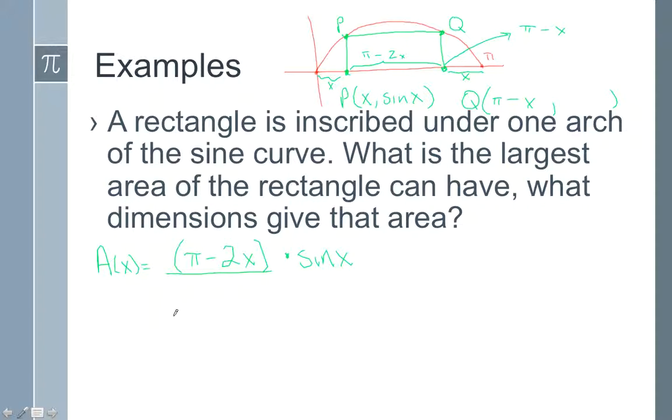The area function is now length times width, and that means I can find the derivative of my area function. The derivative here, this is a product, which means we better use the product rule. So the derivative of the first is negative 2 times the second function, which is sine of x, plus the derivative of sine of x is cosine x times this piece. So pi minus 2x times cosine x.